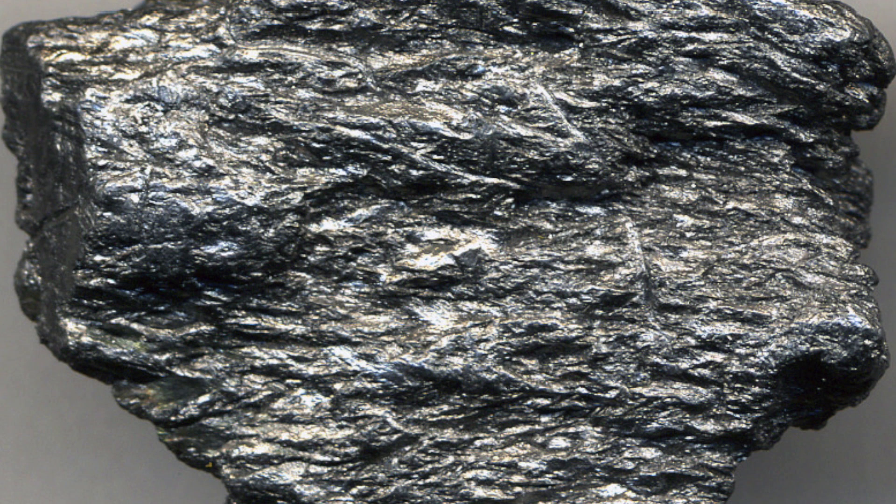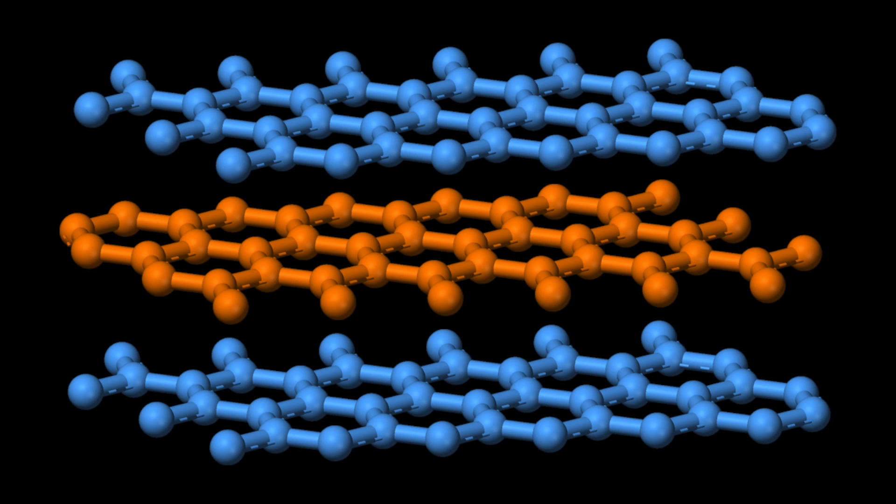Graphite is what's considered a bulk material, because on an atomic scale, graphite is actually millions of single atom thick sheets of carbon, all stacked together. Because of the stacked nature of graphite, it opens up an interesting approach for how we can modify its material properties.